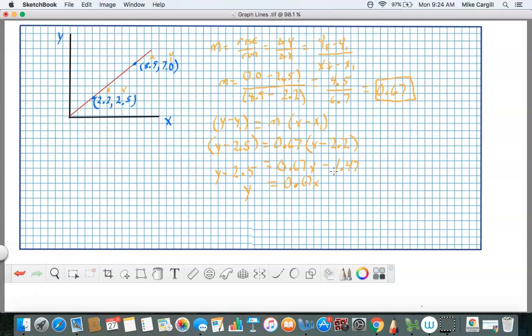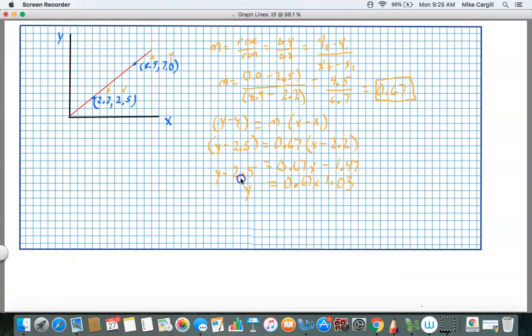1.47 plus 2.5 and that gives me 1.03. Now if I didn't make any mistakes in my math, this would be correct, this would be our answer.